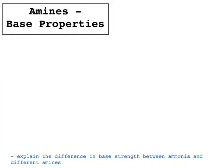Before we start, we really need to understand what a base is. There are two different definitions for a base: the Lewis base and the Brønsted-Lowry base. A Lewis base donates a pair of electrons, whereas a Brønsted-Lowry base accepts a proton. The nitrogen in an amine accepts a proton with its lone pair.